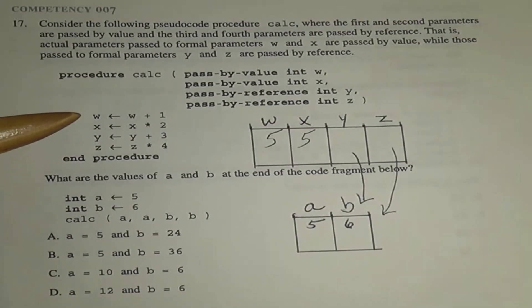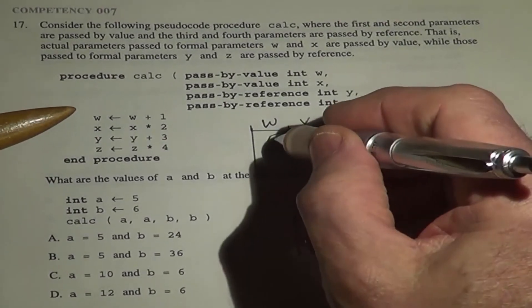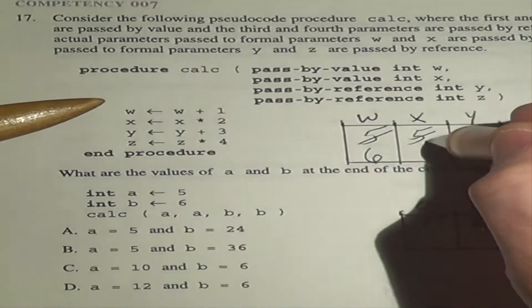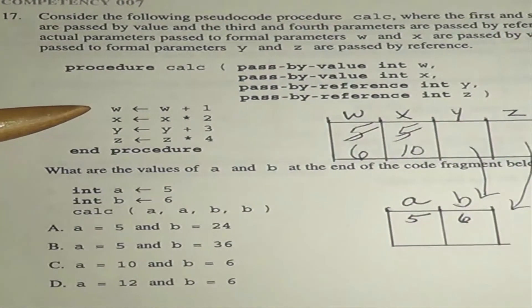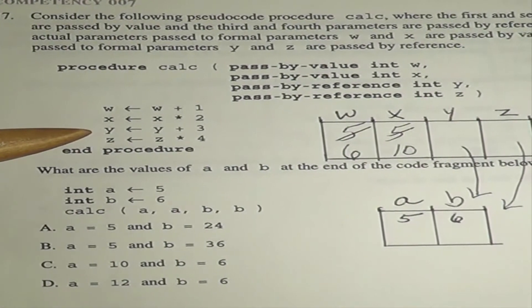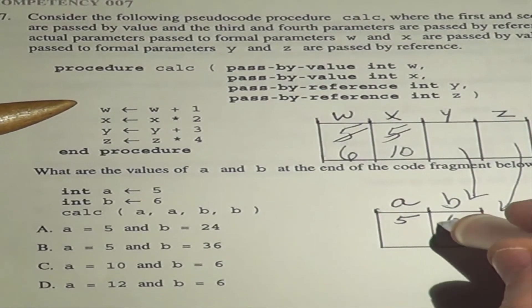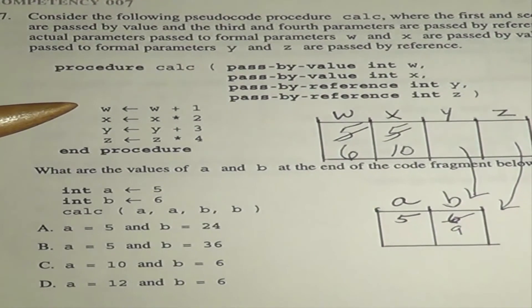W adds 1 to itself. That means the 5 becomes a 6. X doubles itself. That means the X becomes 10. Y increases by 3. That means that this 6 becomes 9.